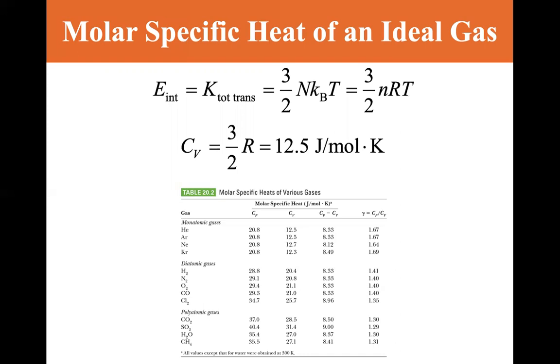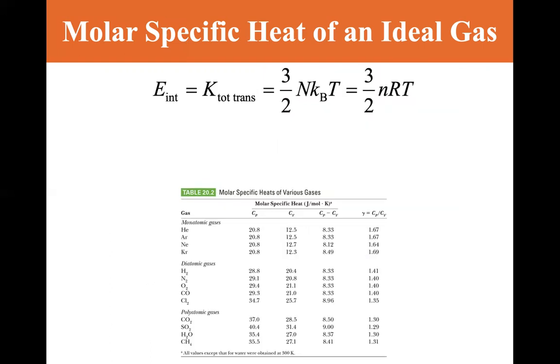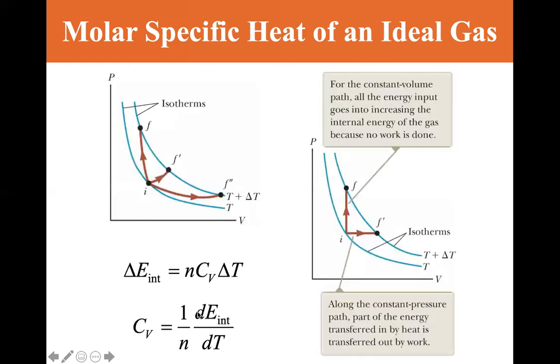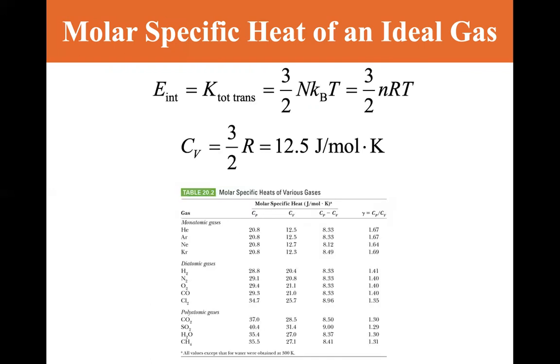So we see that CV, if we use this and substitute back into CV equals 1 over n dE dT, if we take this 3 halves nRT and put it in, we'll see that the T's cancel, the n's cancel, and we're left with CV equals 3 halves r, which is 12.5 joules per mole per degree kelvin.